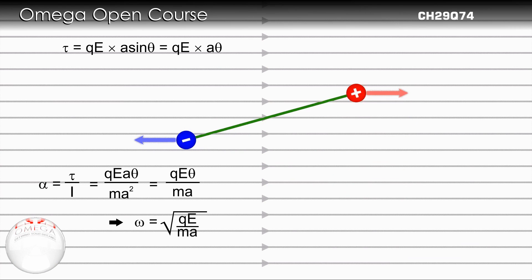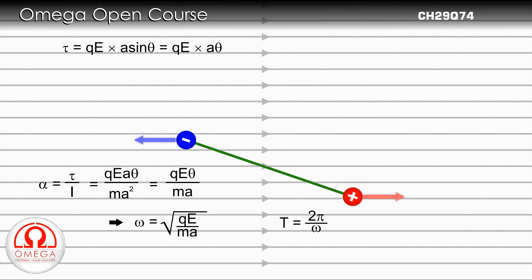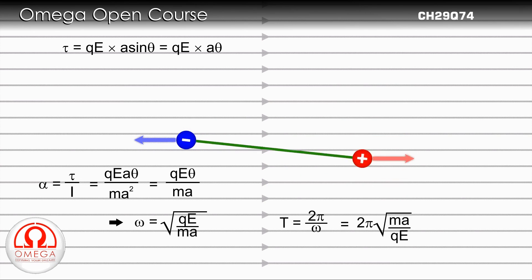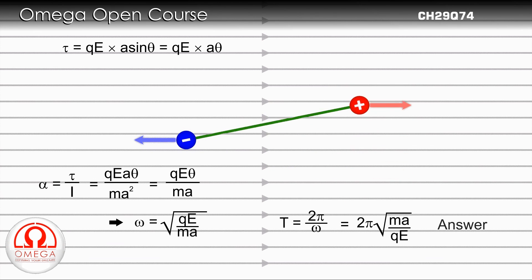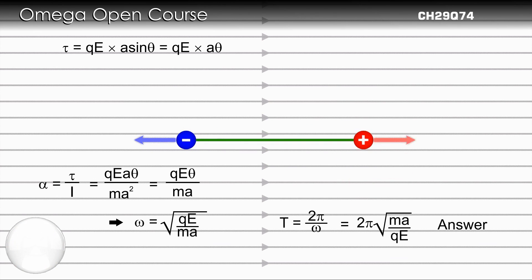The time period is given by 2π divided by omega. Therefore the time period of the oscillation is 2π times the square root of Ma divided by QE. This is our answer.